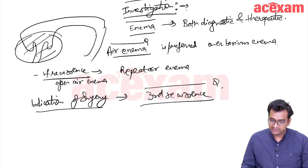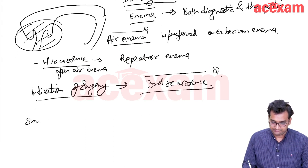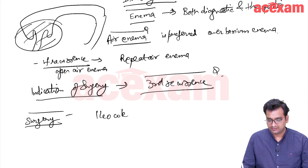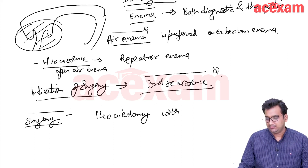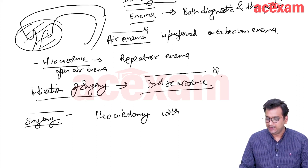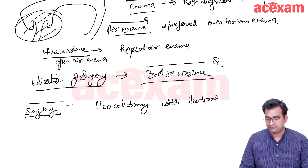The surgery performed is iliocolectomy — resection of the terminal ileum, cecum, and ascending colon — followed by iliotransverse anastomosis.